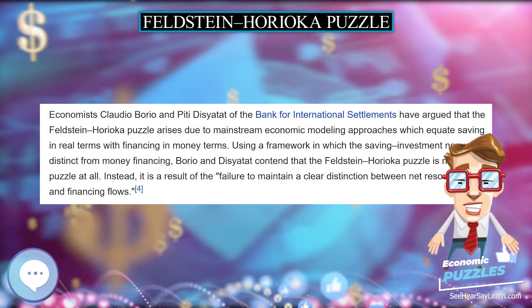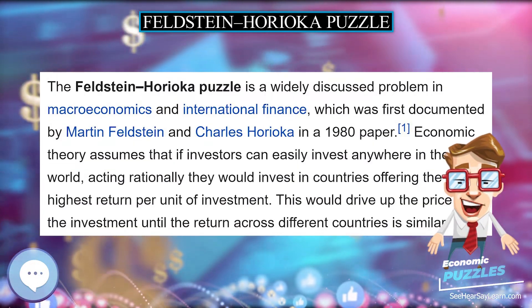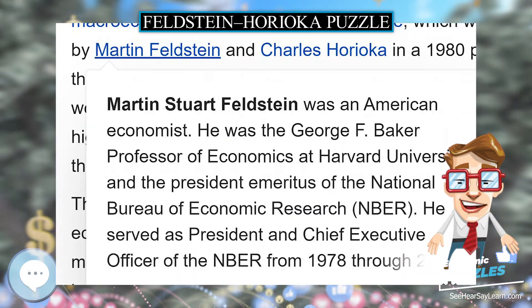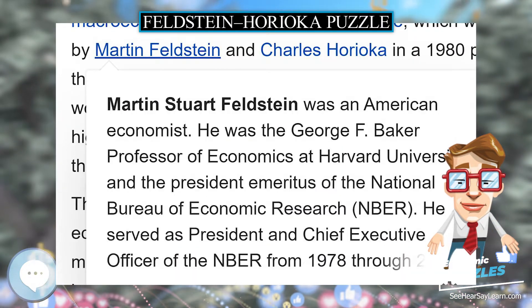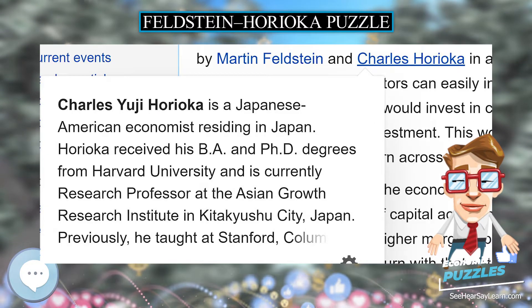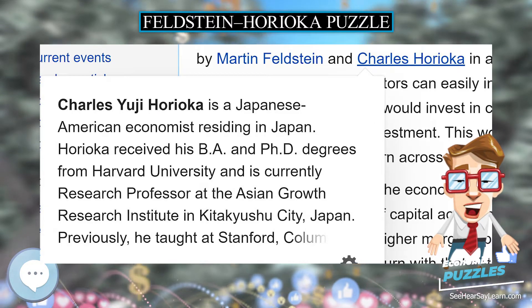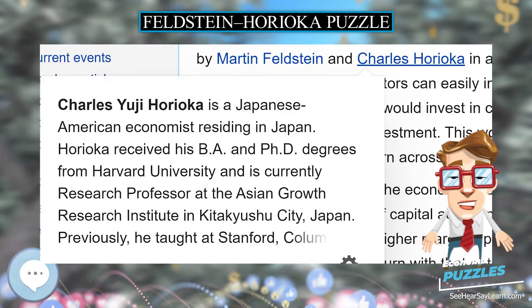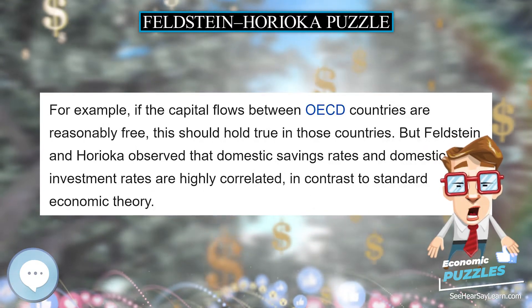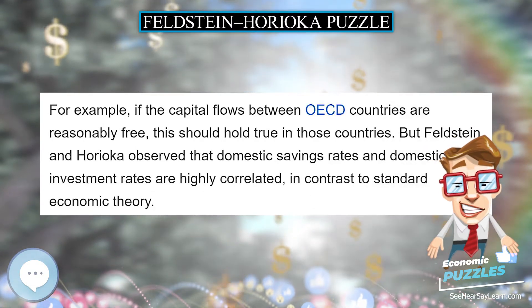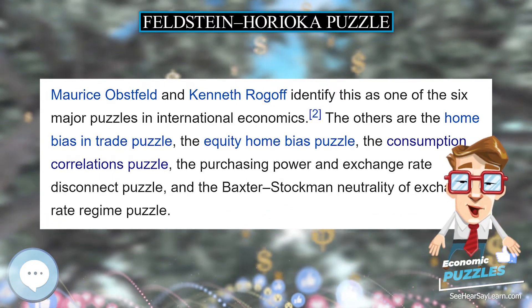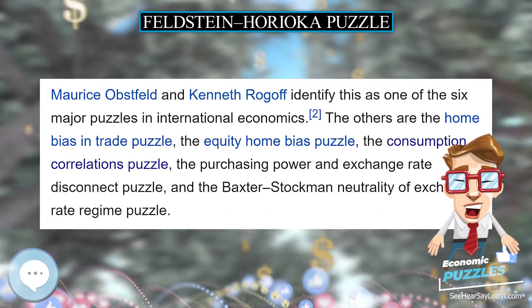This is the same fundamental insight which underlies several other results in economics, like the Fischer separation theorem. Feldstein and Horioka argued that if the assumption is true and there is perfect capital mobility, we should observe low correlation between domestic investment and savings. Borrowers in a country would not need the funds from domestic savers if they could borrow from international markets at world rates.